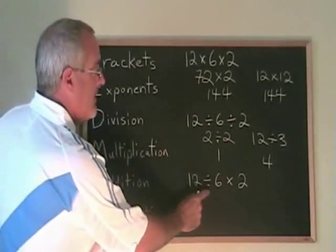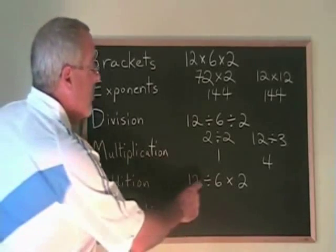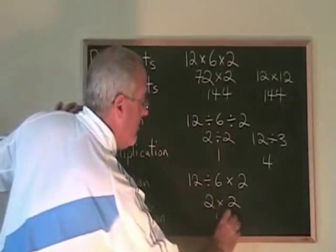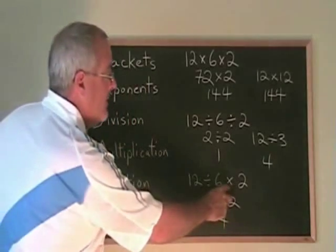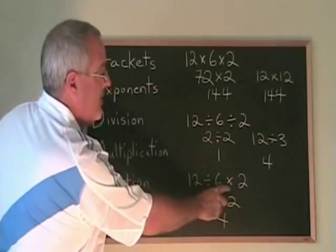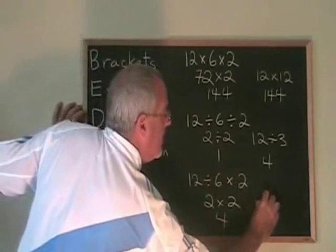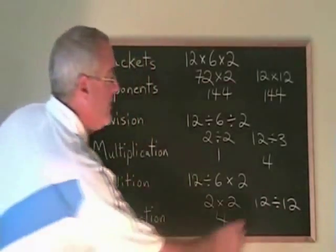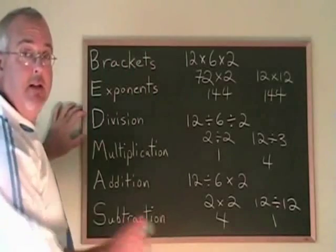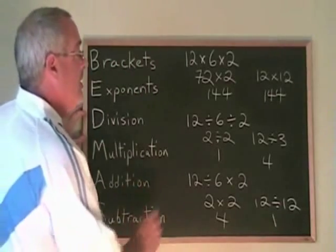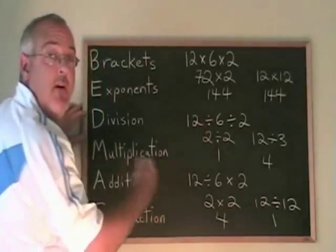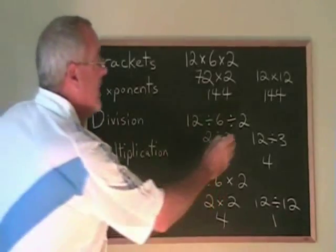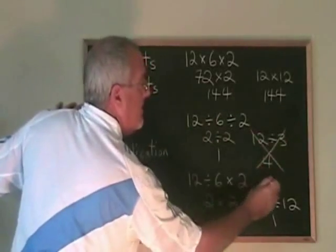The last example has a mixture of division and multiplication. 12 divided by 6 is 2, giving us 2 times 2, which is 4. If we do the multiplication first, 6 times 2 is 12, and 12 divided by 12 is 1. We get two different answers again. Remember: always do the first of your division and multiplication signs first, reading from left to right. The second approach was the wrong answer.